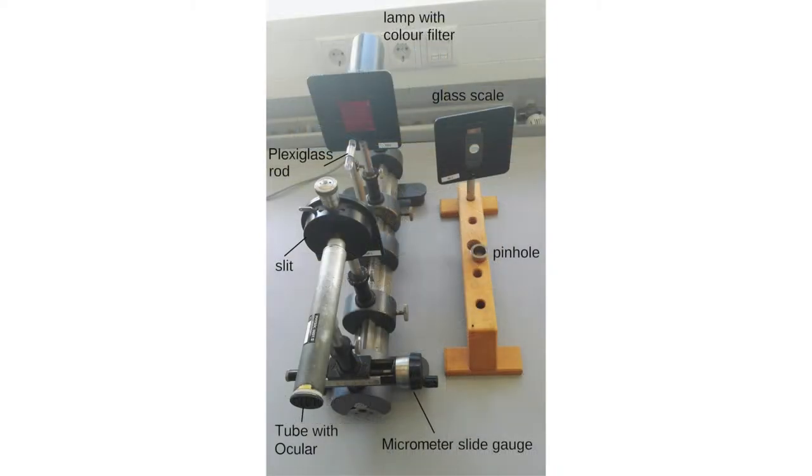The setup of the second part consists of a tube with eyepiece or pinhole, precision slit as aperture diaphragm, color filters, glass scale, micrometer slide gauge, plexiglass rod with graduation on one face and marking on the other, and a lamp.